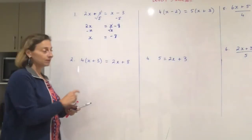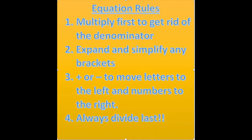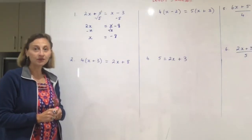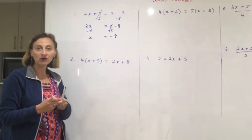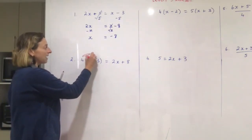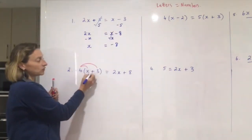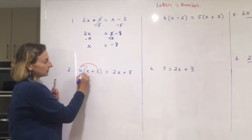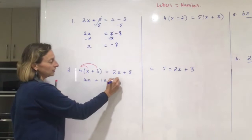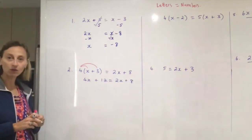Let's have a look at the next one. Rule number one: get rid of any fractions — no fractions. Rule number two: expand and simplify — I do have brackets here. So the first thing I need to do is to get rid of the brackets by expanding. We go four times x and four times plus three. So four times x is four x, and four times three is twelve. Over here there are no brackets, so we just write down what's there.